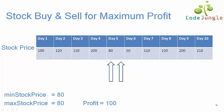Next we need to update the minimum stock price and maximum stock price. This value has to be set to the price of the day on which the condition got false. So both minimum stock price and maximum stock price become 80.